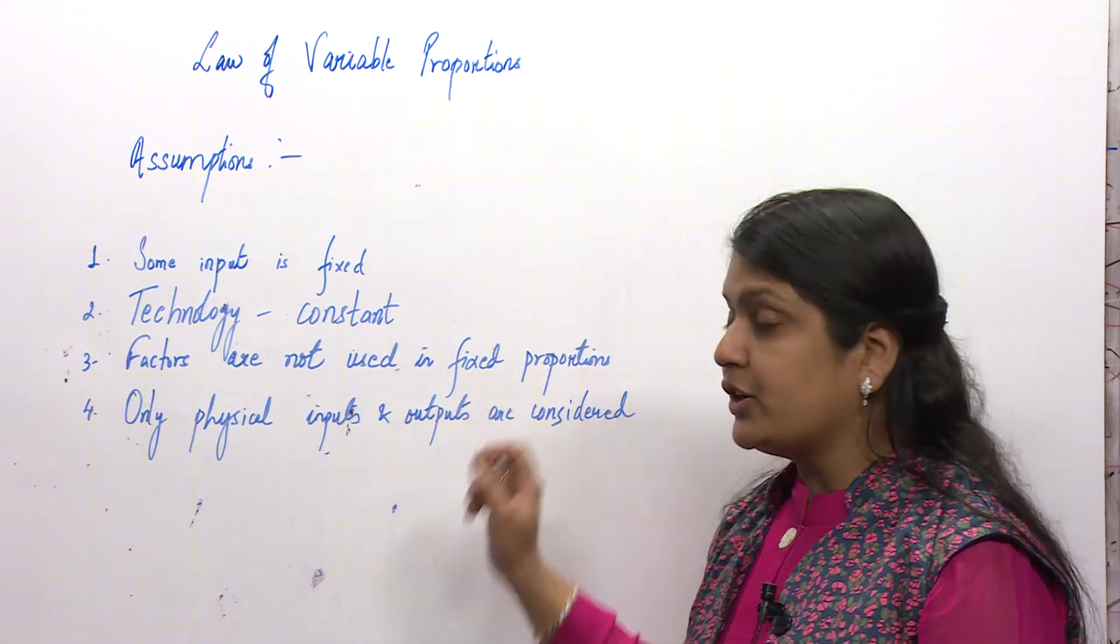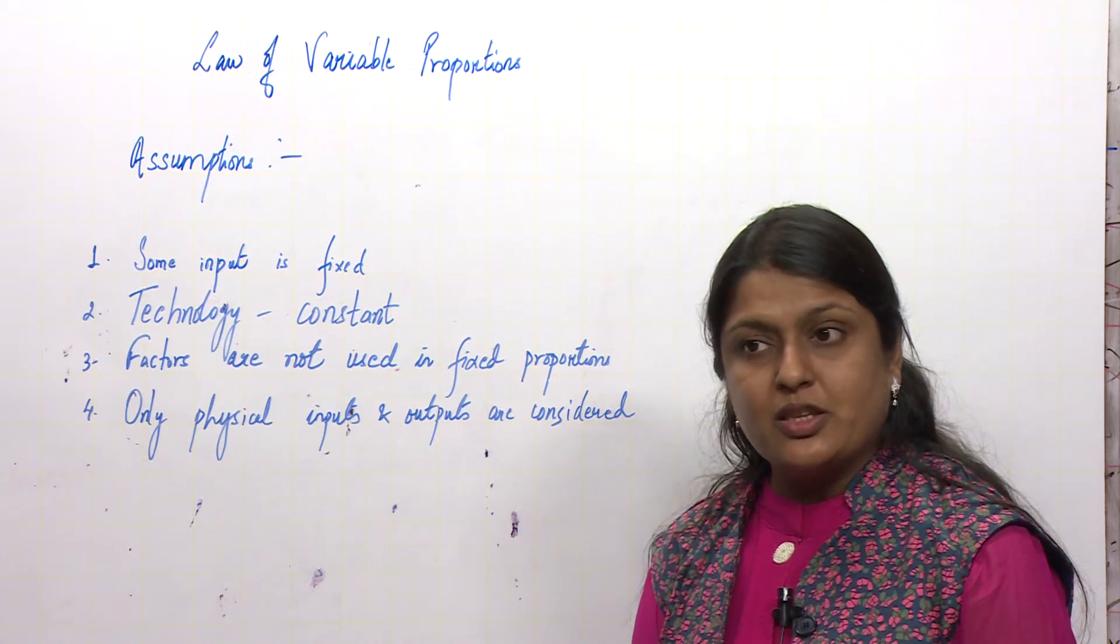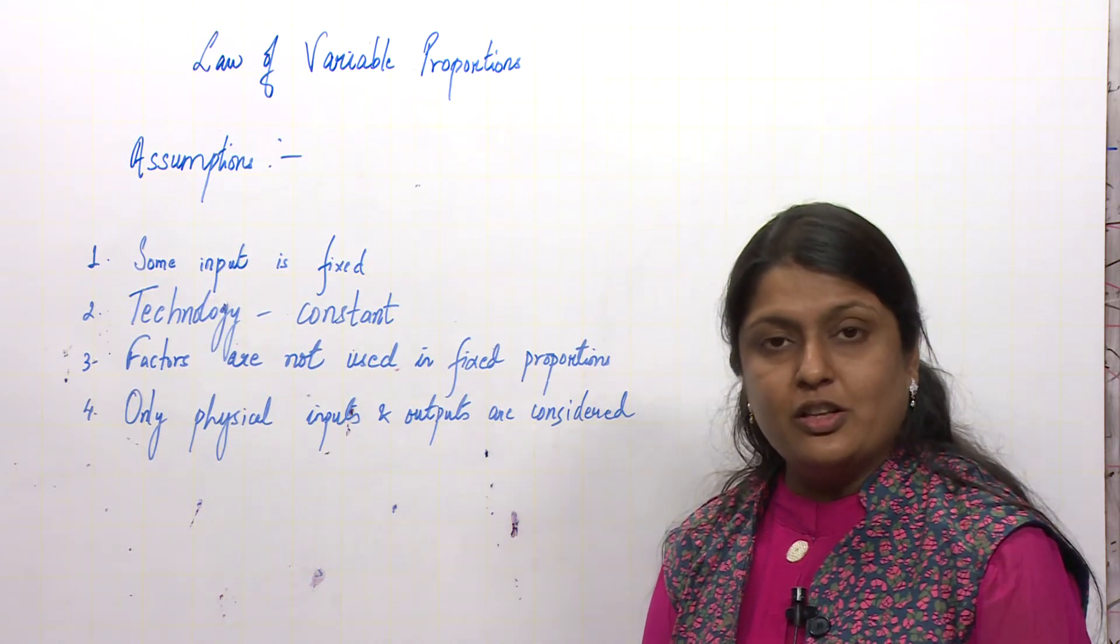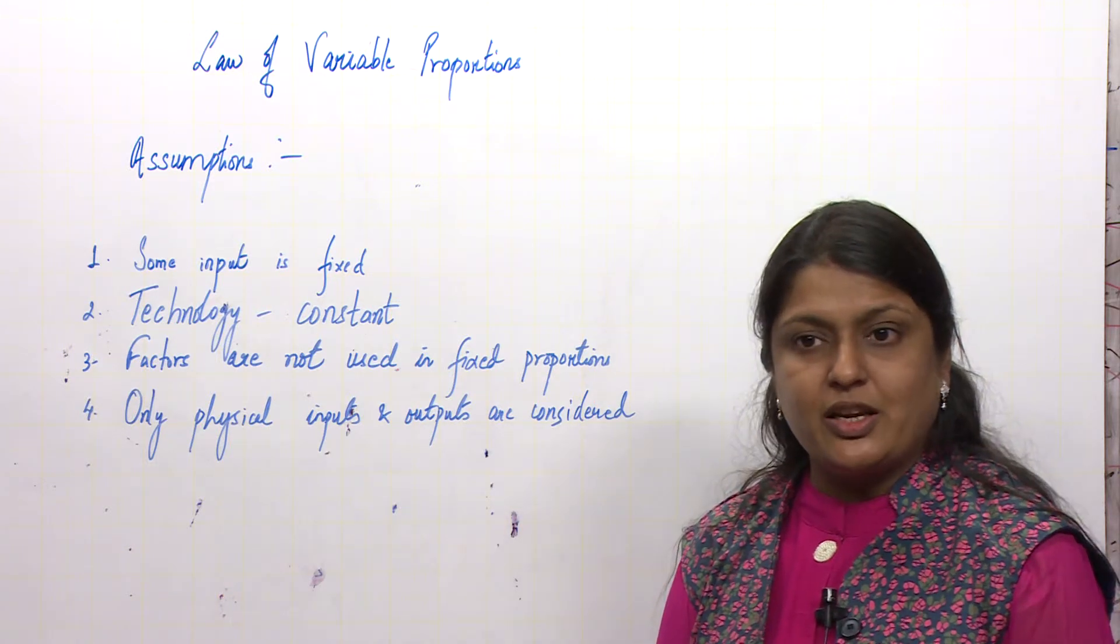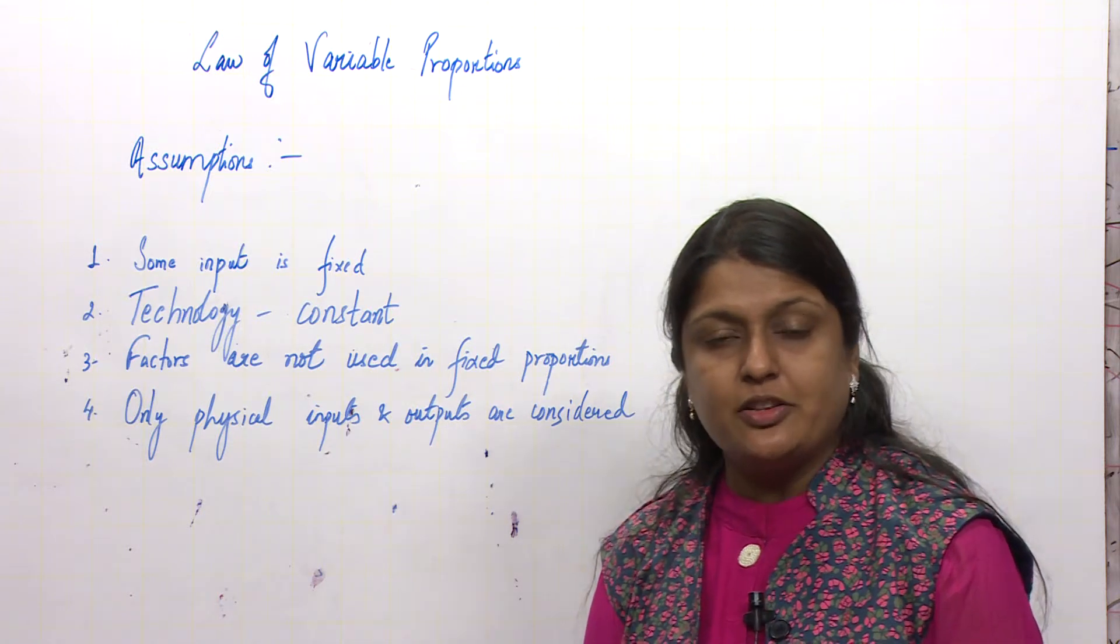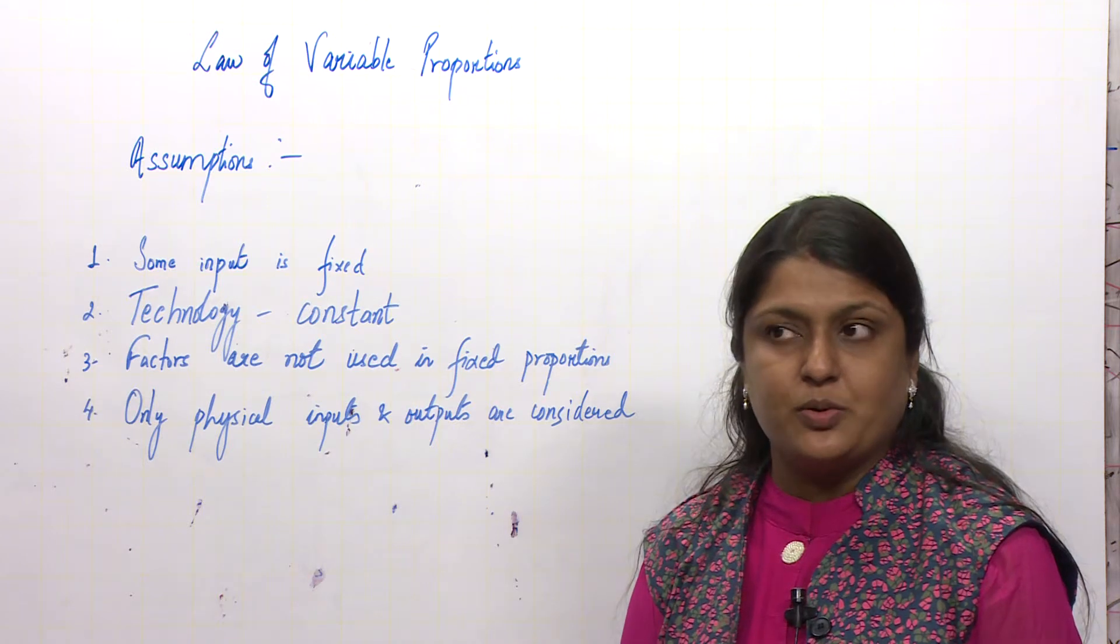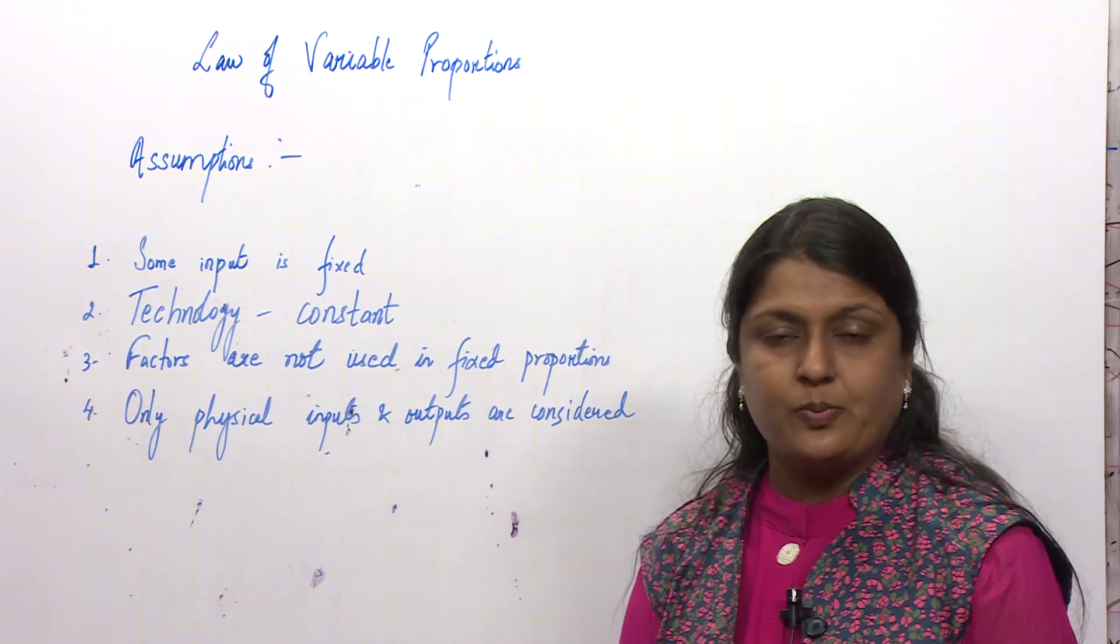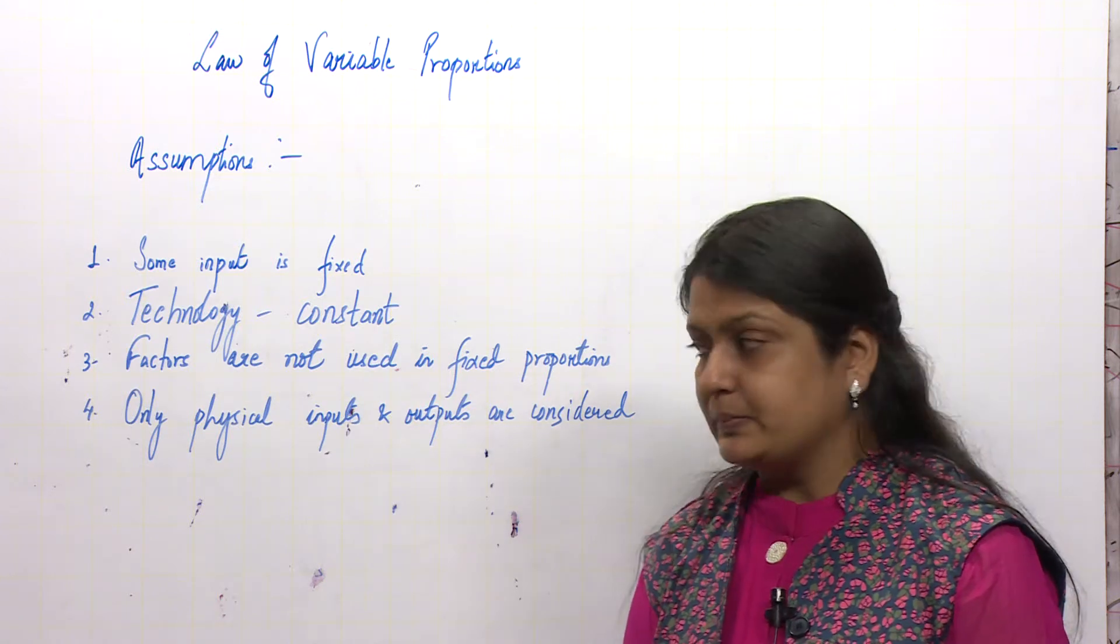Factors are not used in fixed proportions. When do we use factors in fixed proportions? In the long run, when all the factors become variable. When all factors are variable, then we can use them in fixed proportions. But what is assumed here? In the short run, we use factors in variable proportions; we are not using factors in fixed proportions. Some factors are fixed and some factors we consider as variable.